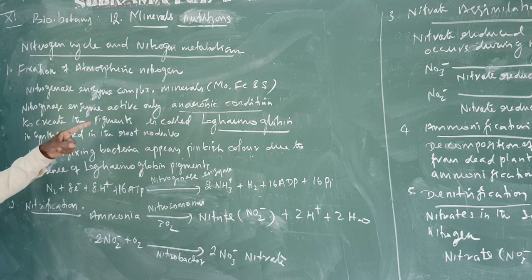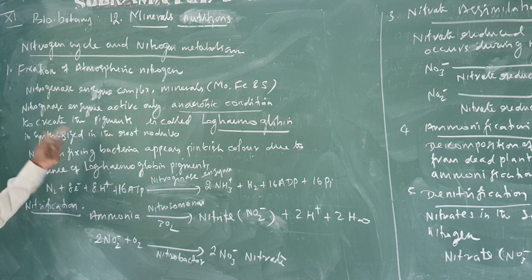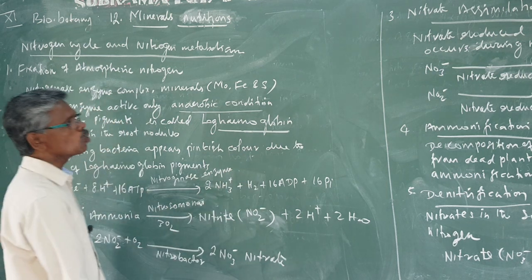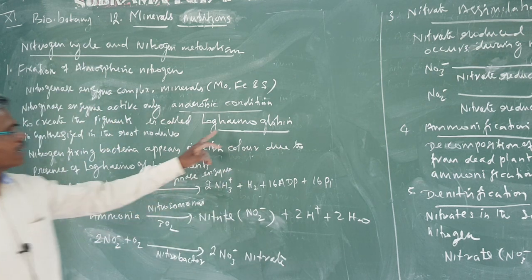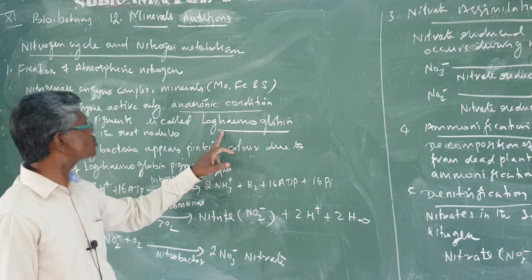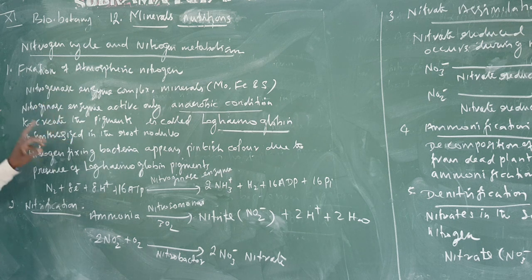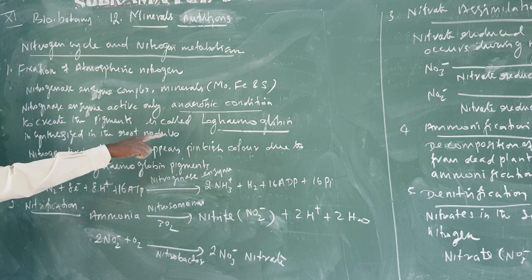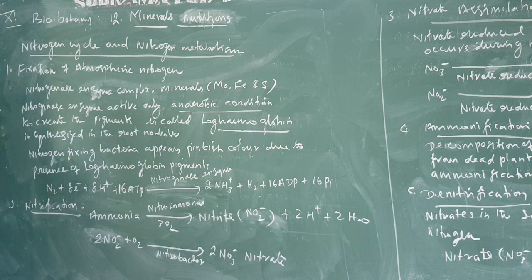With the absence of aerobic conditions — that is, under anaerobic conditions — a pigment called leghemoglobin is created. Leghemoglobin is responsible for the active condition of nitrogenase enzyme under anaerobic conditions. This leghemoglobin is synthesized in the root nodules.